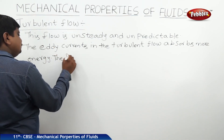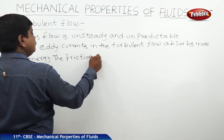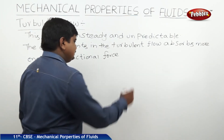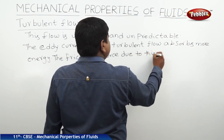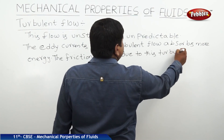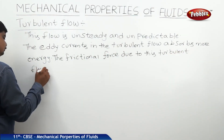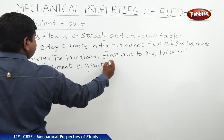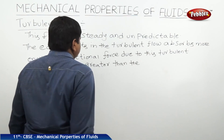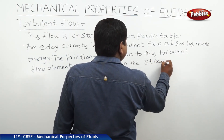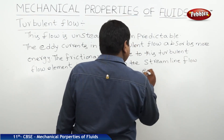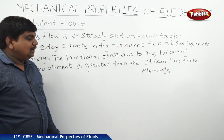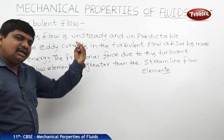The frictional force due to turbulent flow elements is greater than that of streamline flow elements. These are the three key points that distinguish turbulent flow from streamline flow.